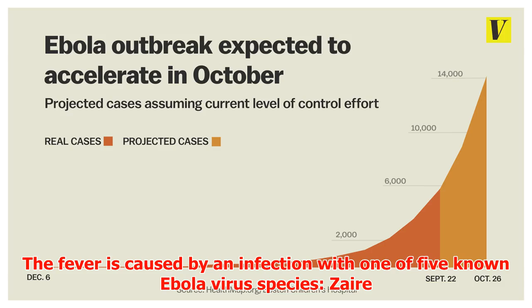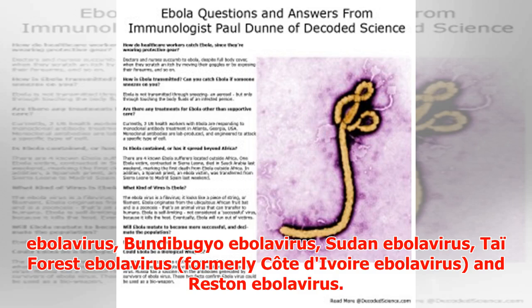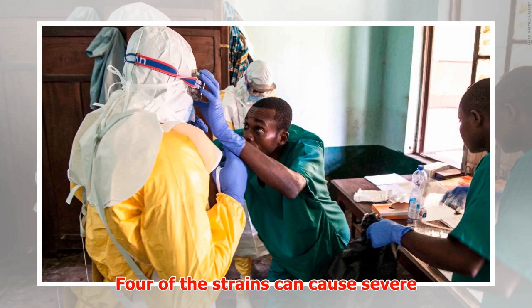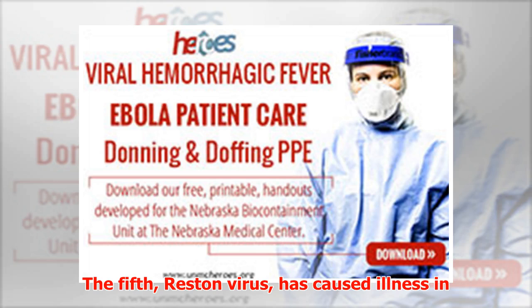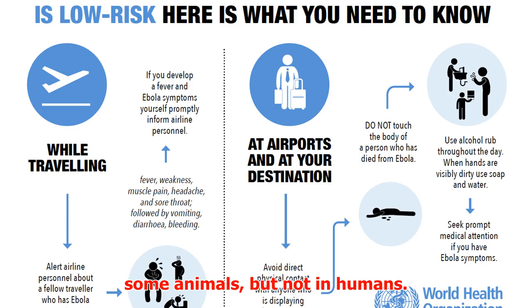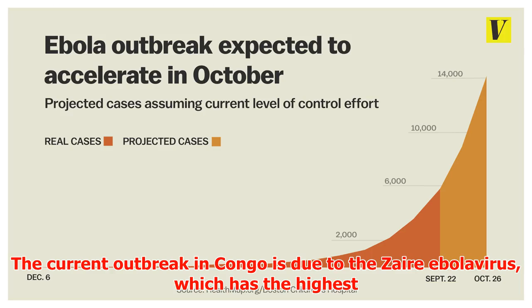The five known Ebola virus species are: Zaire Ebola virus, Bundibugyo Ebola virus, Sudan Ebola virus, Taï Forest Ebola virus (formerly Côte d'Ivoire Ebola virus), and Reston Ebola virus. Four of the strains can cause severe illness in humans and animals. The fifth, Reston virus, has caused illness in some animals but not in humans.